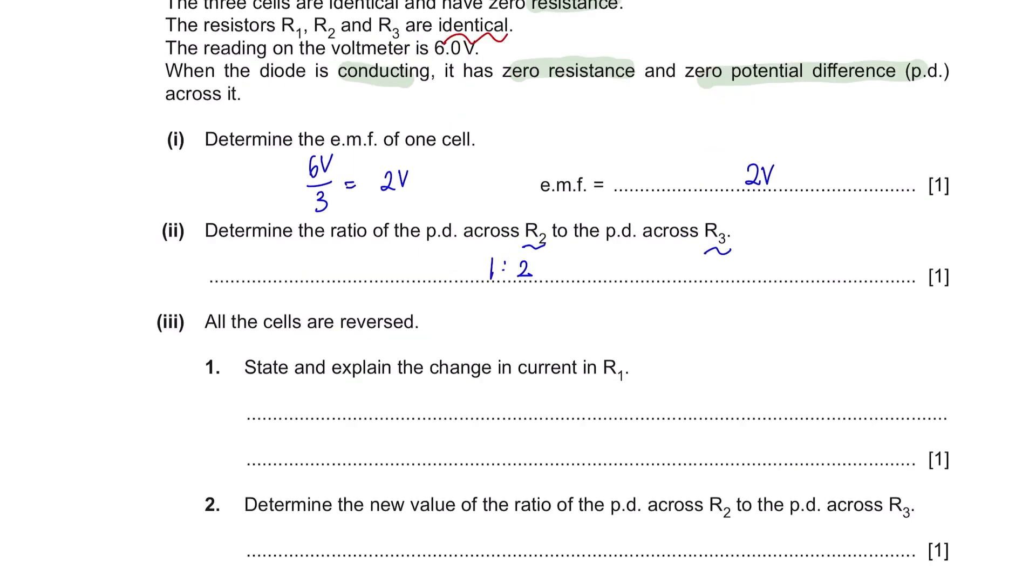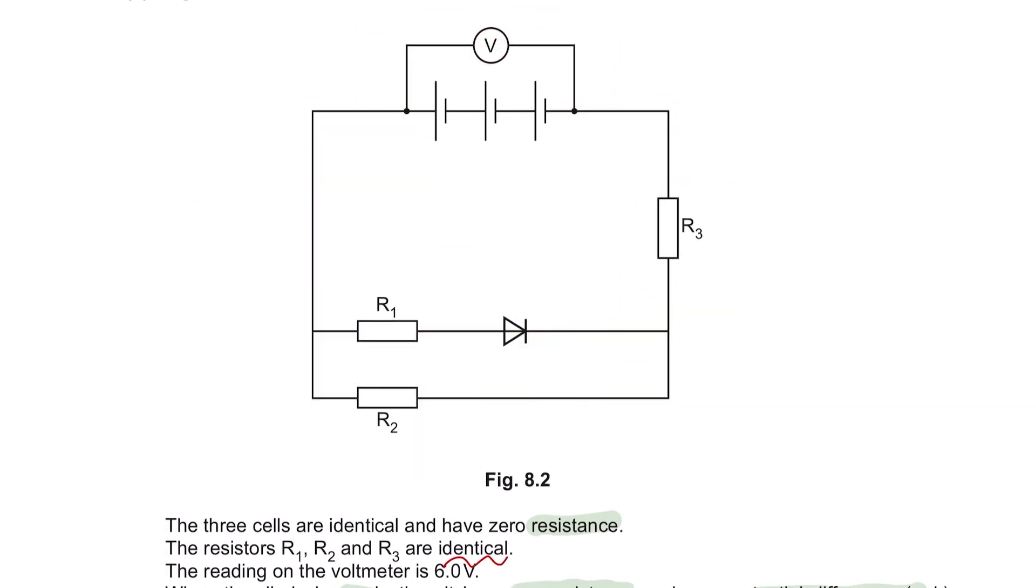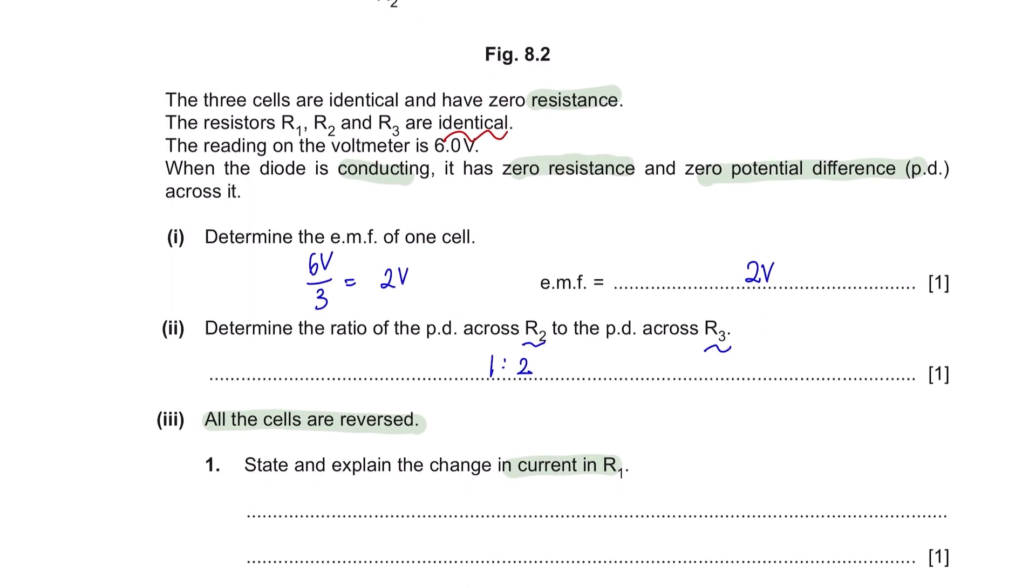Next, part 3: All the cells are reversed. Question 1: State and explain the change in current in R1. Let's look at the circuit. If the batteries are reversed, this is what it would look like. And your current would now flow in the opposite direction, meaning that it will flow like this, going through your diode in this direction. The diode is now on the opposite side of the current flow, meaning that there will be no current passing through R1. This means that the current in R1 is 0. So if I mention current is 0, I'm only stating the change in the current. Even though the question gives you one mark, you still have to explain the change in current. The explanation is because diode is now in wrong direction.